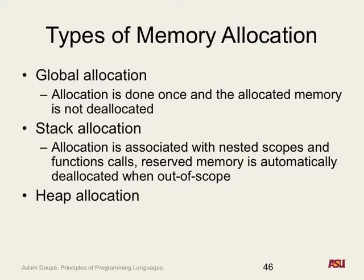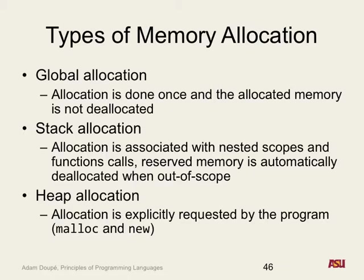Once that memory is out of scope, it's automatically deallocated. The awesome thing is you, the programmer, don't have to do anything to free this memory. What about heap allocation? So heap is where we come in — global allocation the compiler controls, stack allocation the compiler also controls.